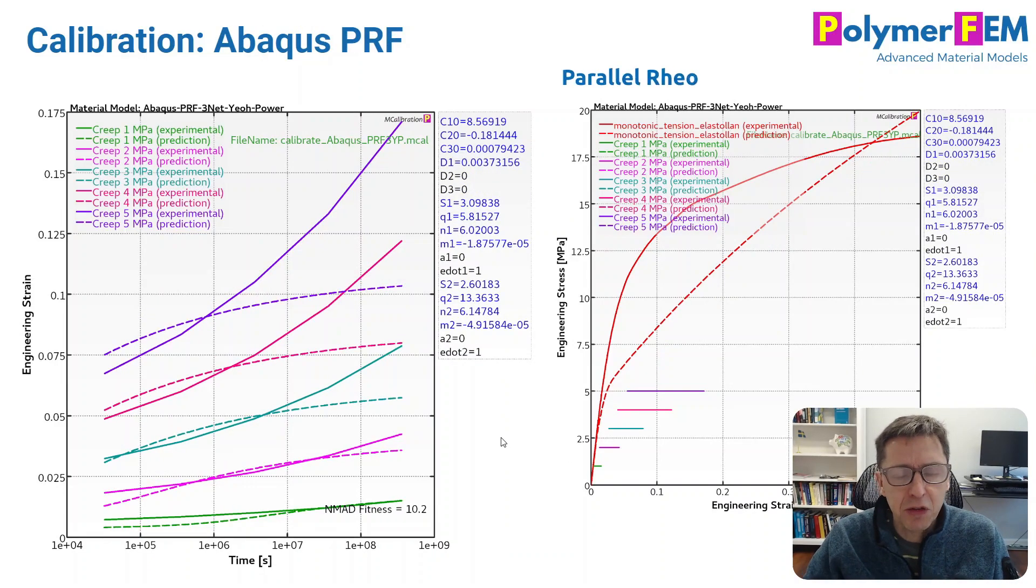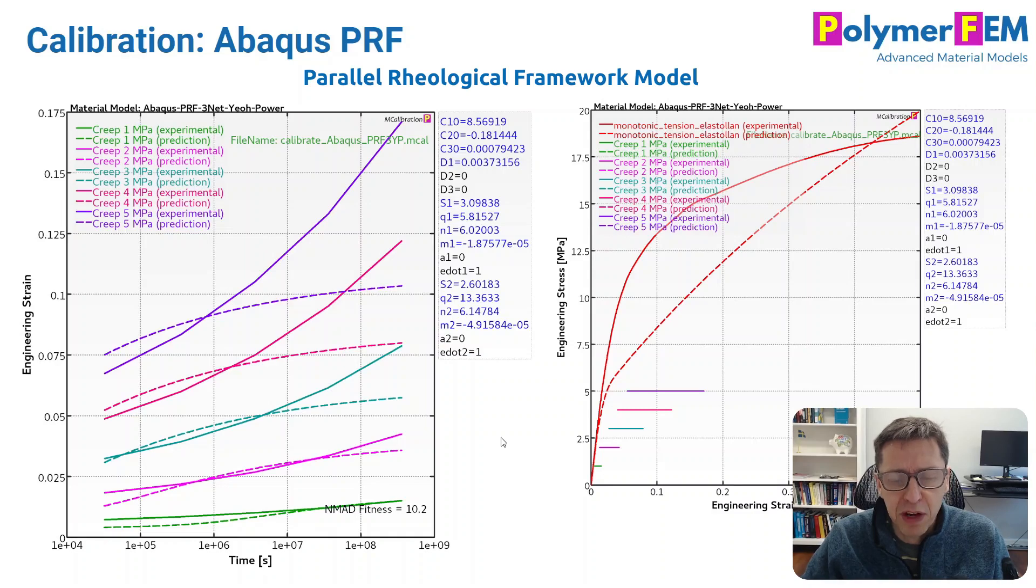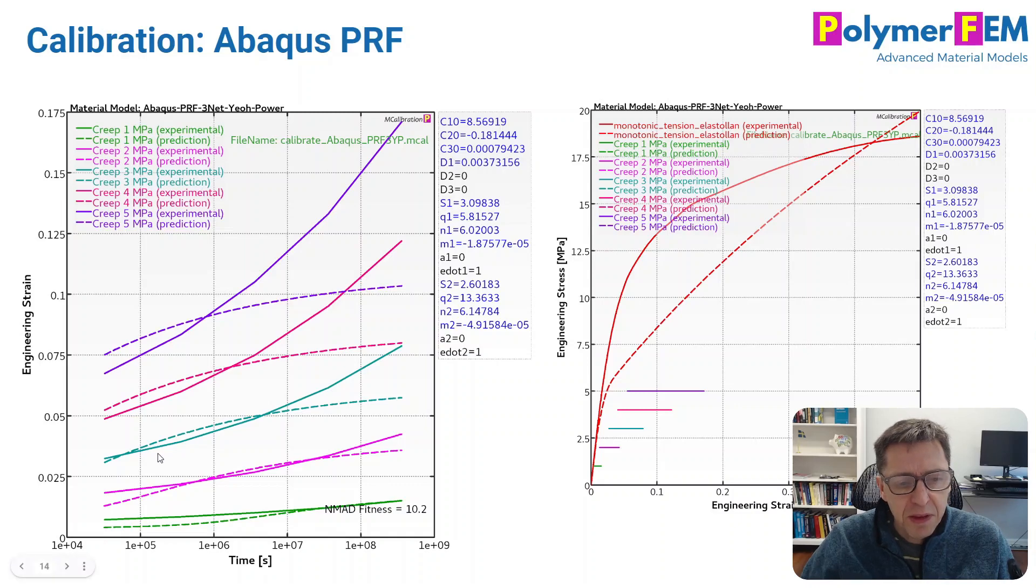How about Abaqus PRF model? A lot of people try to use the PRF model for thermoplastics and TPU type materials. And it's kind of interesting that this is the best I could come up with. This is a three-network PRF model with hyperelasticity and power flow behavior.